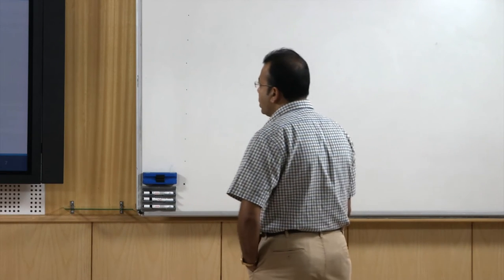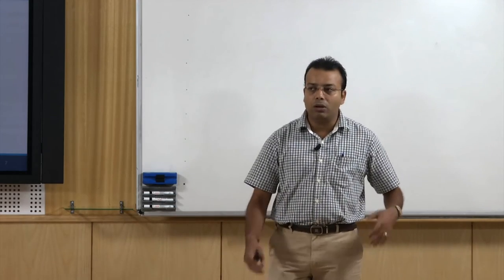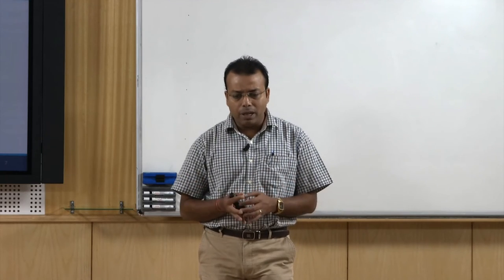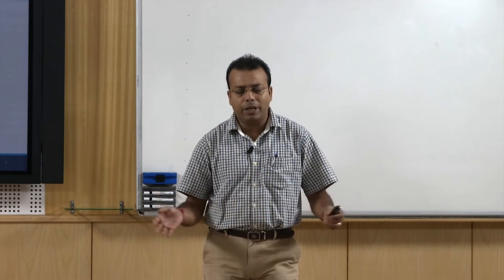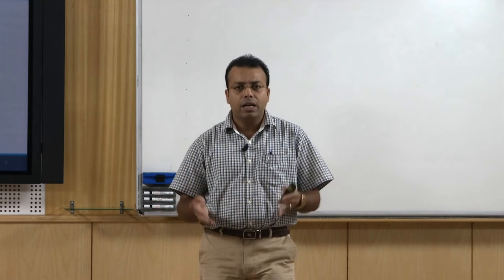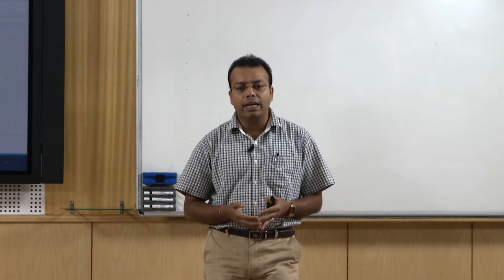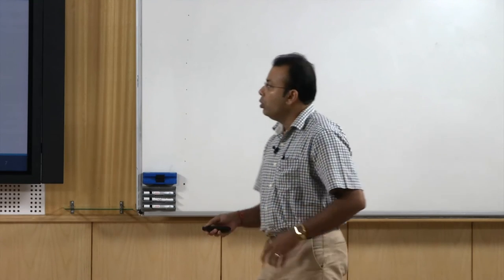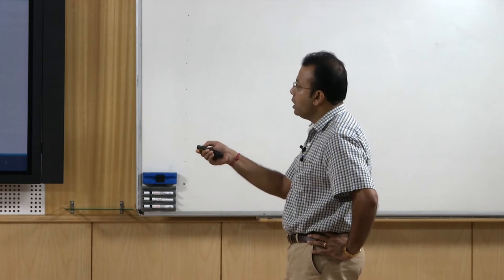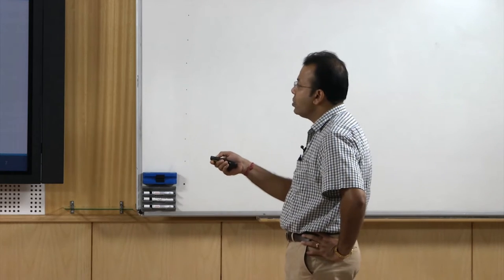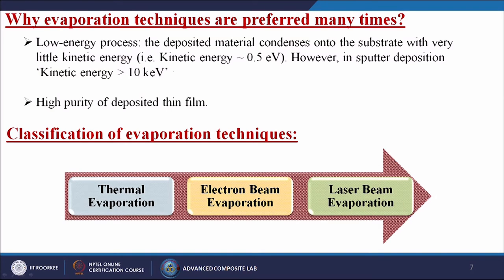Evaporation techniques are preferred for numerous applications because they are the easiest and most inexpensive methods and can be done very quickly. It is a low energy process — the deposited material condenses onto the substrate with very little kinetic energy, generally around 0.5 electron volts, whereas in sputter deposition the kinetic energy is more than 10 kilo-electron volts. The main classifications of evaporation techniques are thermal evaporation, electron beam evaporation, and laser beam evaporation.